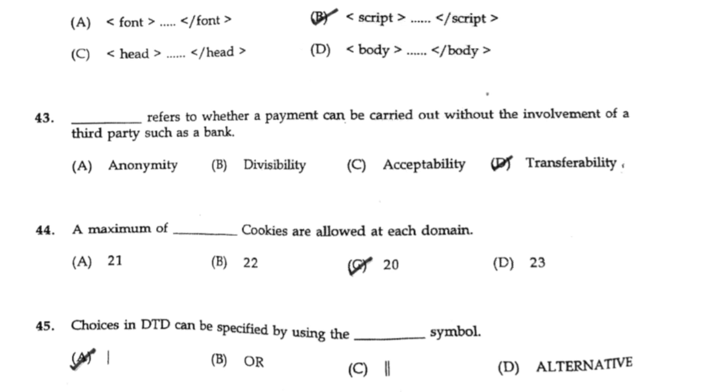Choices in DTD can be specified by using the [blank] symbol. The answer is option A: the pipe (|) symbol.